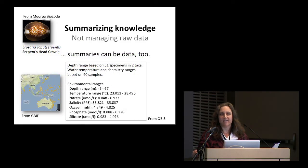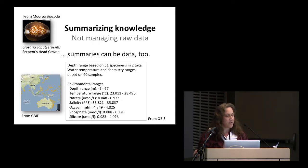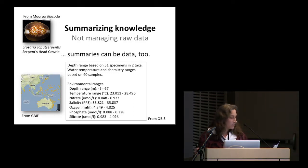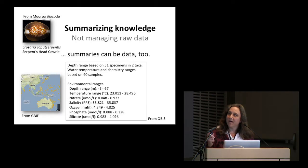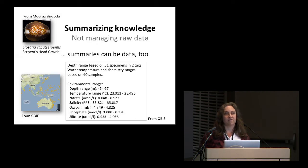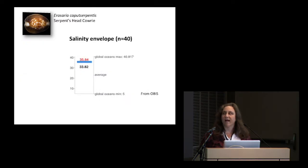I want to emphasize that EOL is dealing with summarized knowledge. For example, for the serpent's head cowrie that you see here, we have images from the Marea Biocode project. But instead of serving individual specimen data, we also get an overall distribution map of those specimens from the Global Biodiversity Information Facility. We can also get a summary of environmental data associated with those specimens from the Ocean Biogeographic Information System database. Imagine if we could do a summary like this across all museum specimen databases in the world — that would give us a good sense of the environmental characteristics for each organism. And those summaries can actually be data used in further analyses. This is a graphical depiction of some of that data.